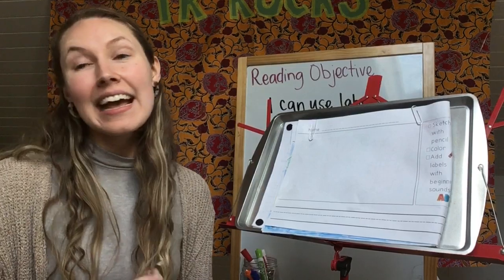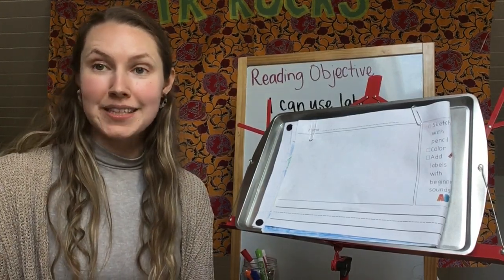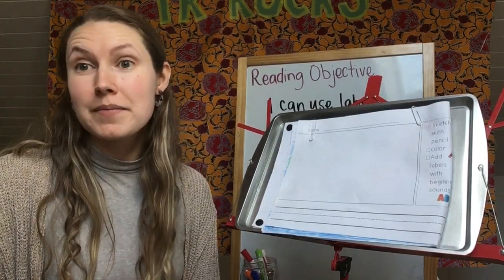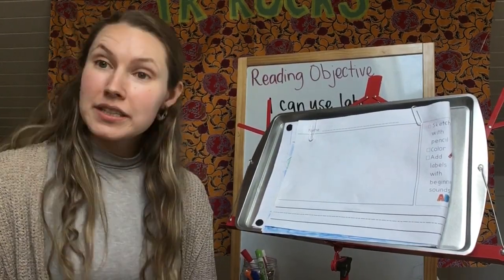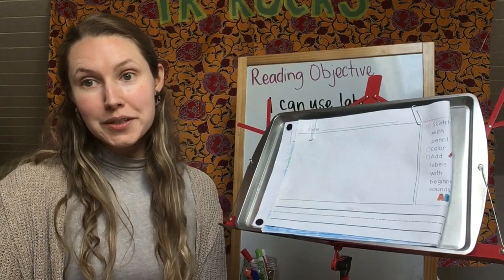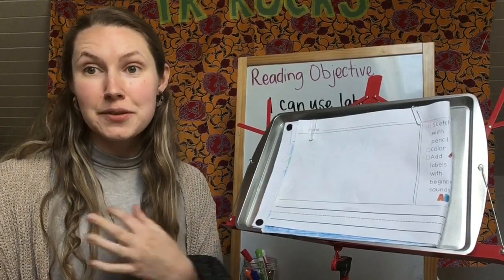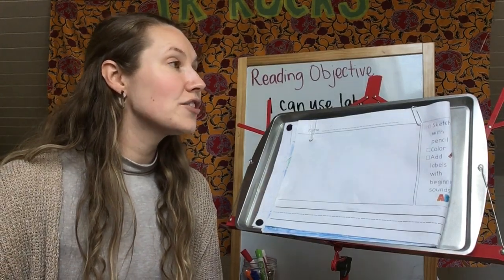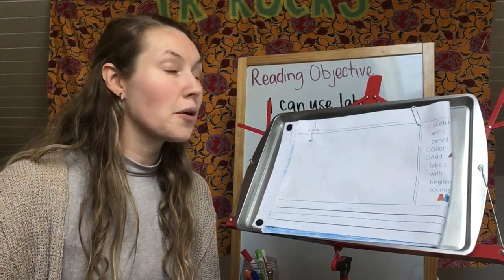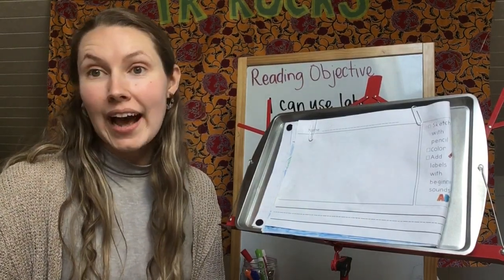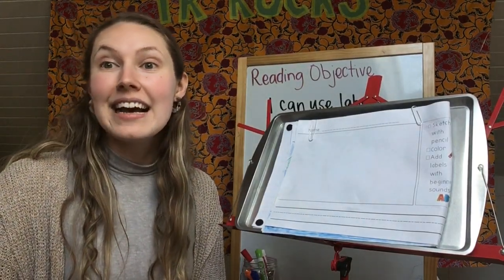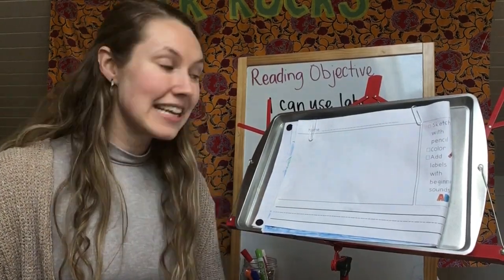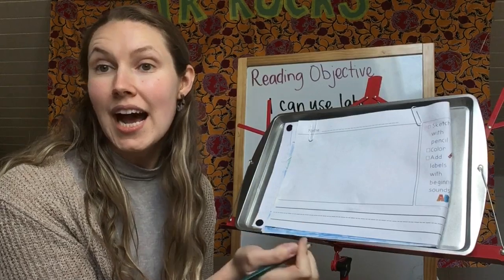I've got my journal here, and I'm going to think about what I want to write about today. You can really think about anything when you're journaling — something that's happened before, something you're looking forward to, all sorts of things. I think I am going to journal about going on a hike. I really like to go on hikes to get outside, be active, and be healthy.